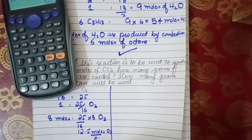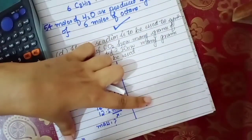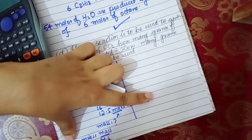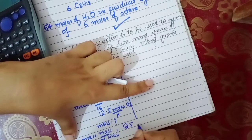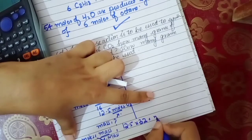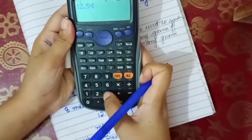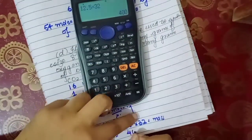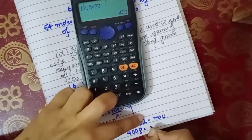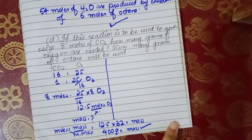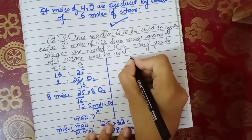We are required to give mass, not moles, so we use the formula: moles = mass / molar mass. Moles are 12.5 and the molar mass of oxygen is 32. Cross-multiplying gives mass = 12.5 × 32. The answer is 400 grams of oxygen required to synthesize 8 moles of CO₂.